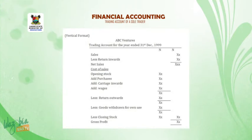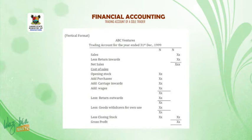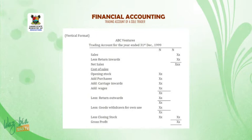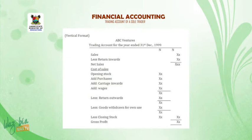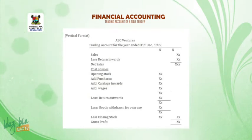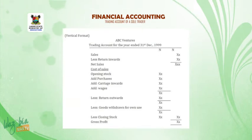We will now look at the vertical format of preparing a trading account. As usual, the name of the organization — ABC Ventures, trading account for the year ended 31 December 1999. We draw our line and write our two naira signs. We have sales, with the figure taken to the second naira sign at the extreme end. We then less return inwards, and on the second naira sign we get our net sales.